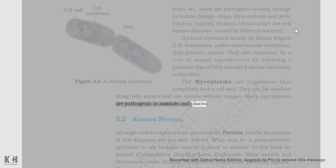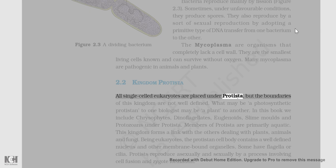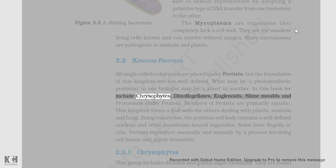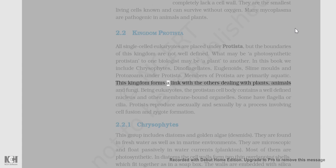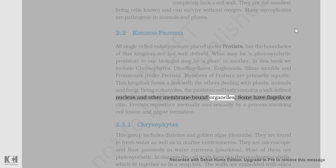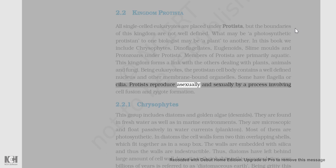2.2 Kingdom Protista: All single-celled eukaryotes are placed under Protista, but the boundaries of this kingdom are not well defined. In this book we include chrysophytes, dinoflagellates, euglenoids, slime molds, and protozoans under Protista. Members of Protista are primarily aquatic. This kingdom forms a link with the others dealing with plants, animals, and fungi. Being eukaryotes, the protistan cell body contains a well-defined nucleus and other membrane-bound organelles. Some have flagella or cilia. Protists reproduce asexually and sexually by a process involving cell fusion and zygote formation.